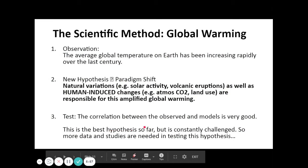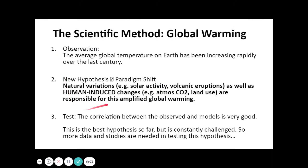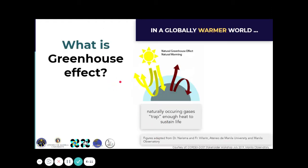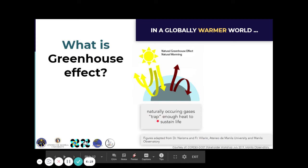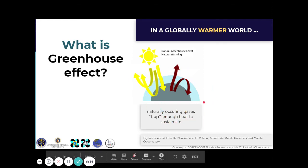Testing the correlations, we found that the observed data and the model are actually converging. The greenhouse effect is a natural process where naturally occurring gases such as carbon dioxide, methane, and other greenhouse gases can trap or absorb enough heat to sustain life. It is a natural process and we need it to sustain life on Earth.